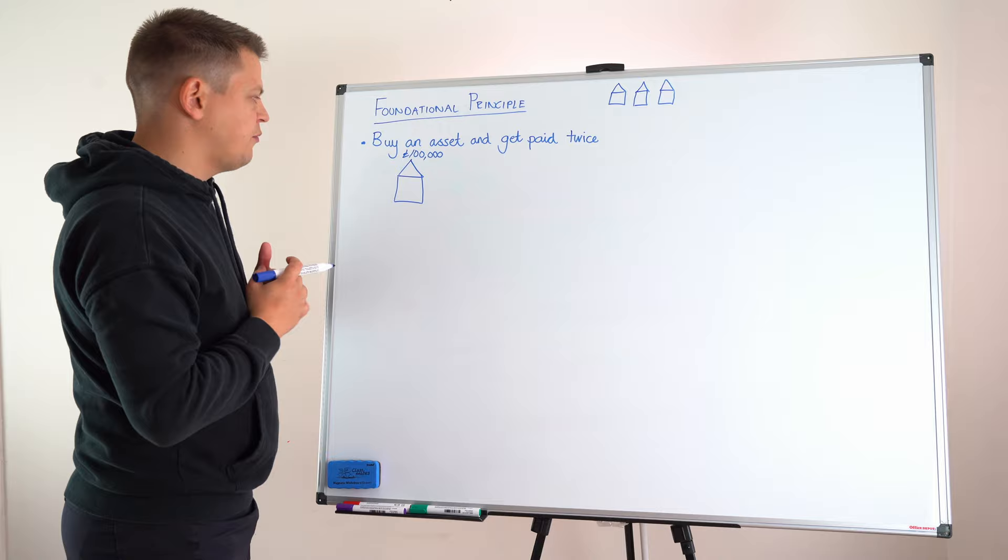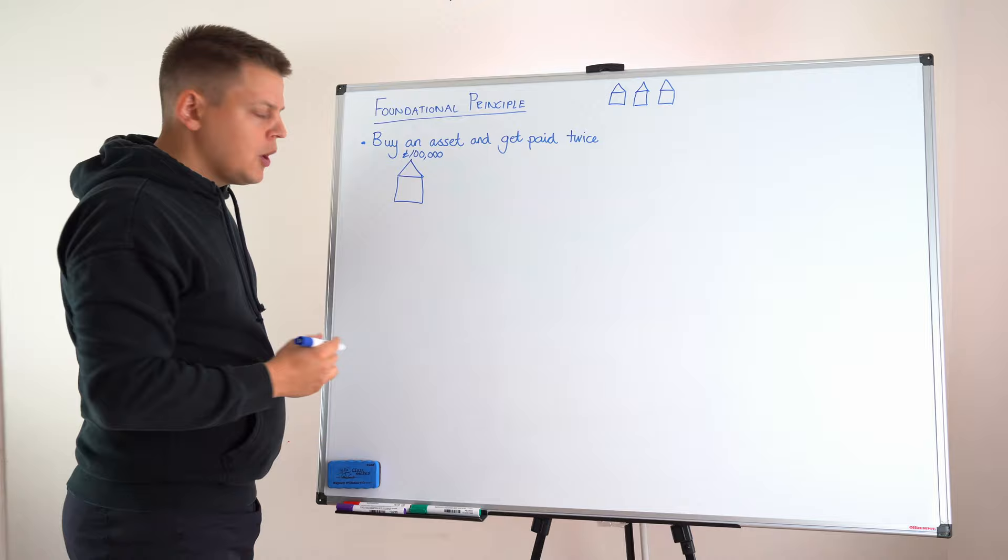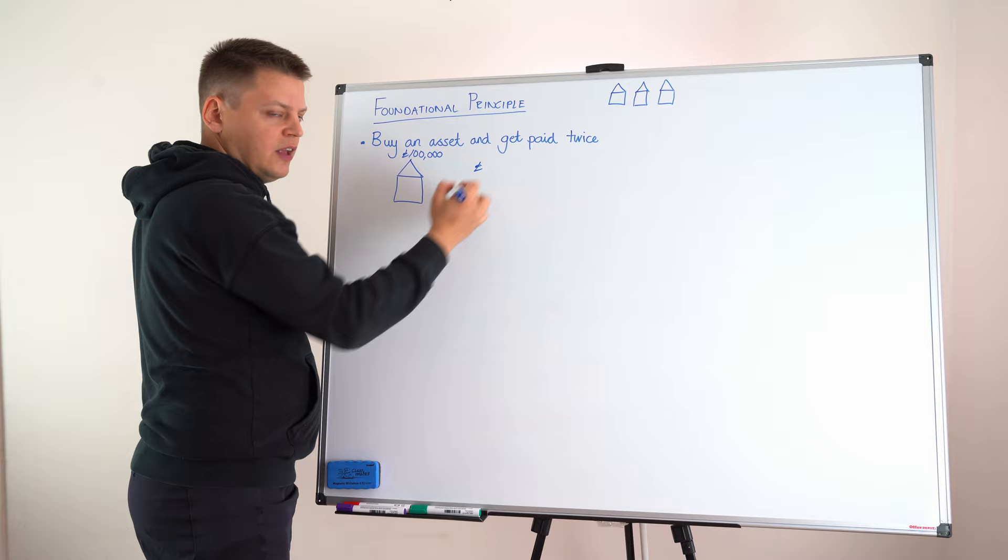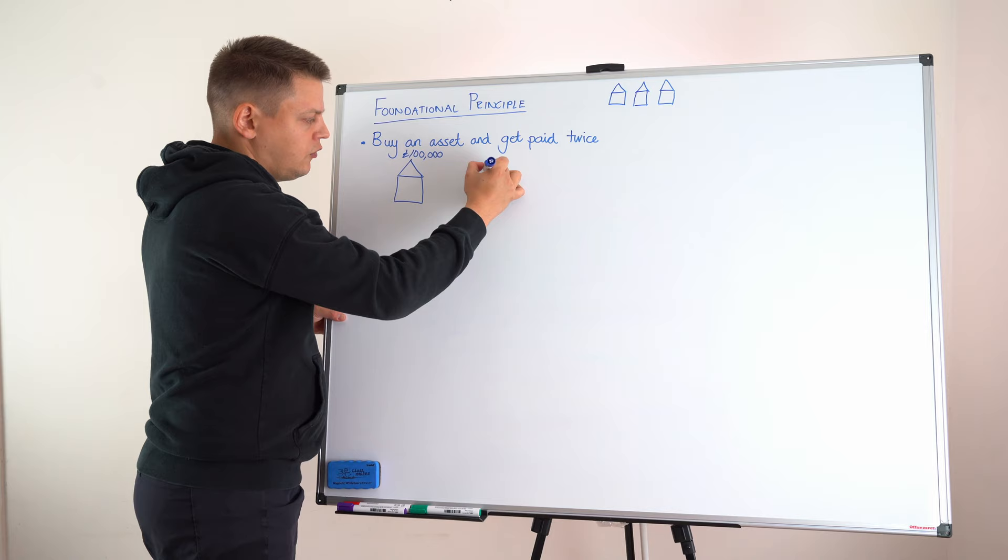What about getting paid twice? Well, remember when we gave the description, we said that this house, you could live in it from day one. So that's what we do. We find a family, and we say, we'd like you to live in our house. And they say, yes. And we say, well, if you'd like to live in our house, every month please send across £600 per calendar month.